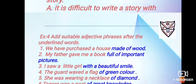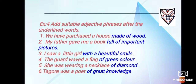Exercise 4: add suitable adjective phrases after the underlined words. You can add your own phrases. Number one: 'We have purchased a house' — you can add 'made of wood' or 'made of stone.' Number two: 'My father gave me a book full of important pictures' — or you can write 'a book of great value.' Number three: 'I saw a little girl with a beautiful smile' — or 'a little girl wearing a black dress.'